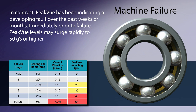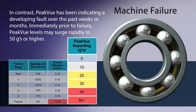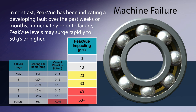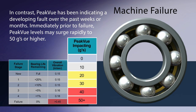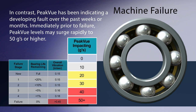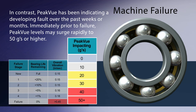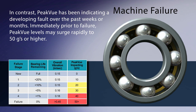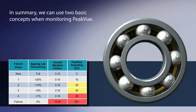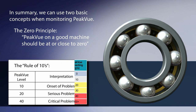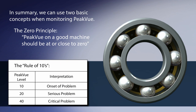In contrast, peak view has been indicating a developing fault over the past weeks or even months. Immediately prior to failure, peak view levels may surge rapidly to 50 G's or higher. In summary, we can use two basic concepts when monitoring peak view: the zero principle — peak view on a good machine should be at or close to zero.